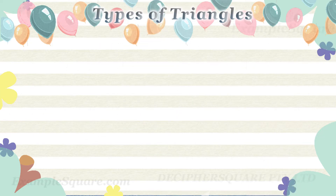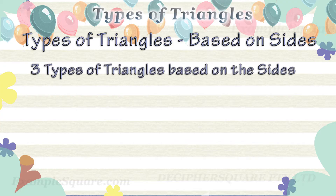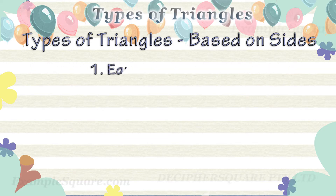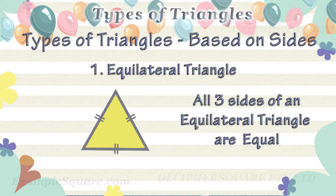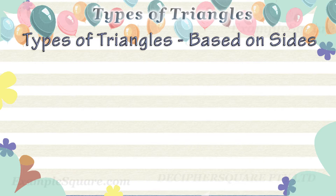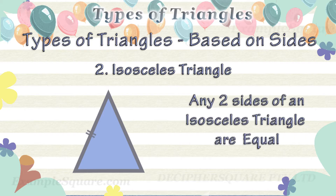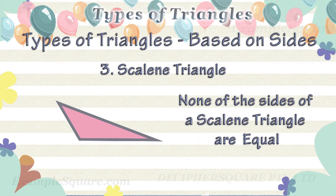What are the different types of triangles based on the sides of the triangles? There are three types of triangles based on the sides. A triangle in which all three sides are equal is called an equilateral triangle. A triangle in which any two sides are equal is called an isosceles triangle. And a triangle in which none of the sides are equal is called a scalene triangle.